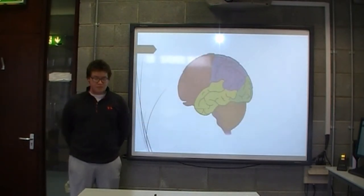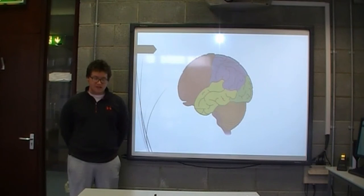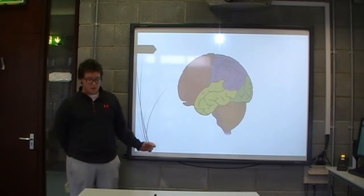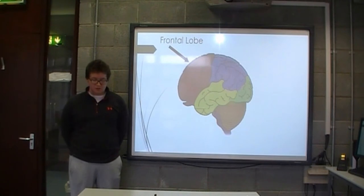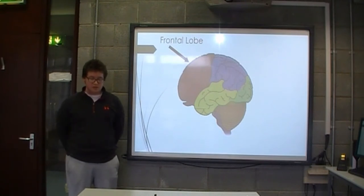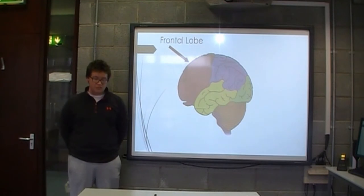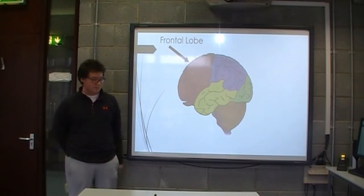The adolescent brain consists of several different parts. The cerebral cortex is the outer layer which gives the brain its wrinkled look. Within the cerebral cortex there are four lobes. The frontal lobe is associated with thought, memory and behaviour, and is the lobe most affected during adolescence.